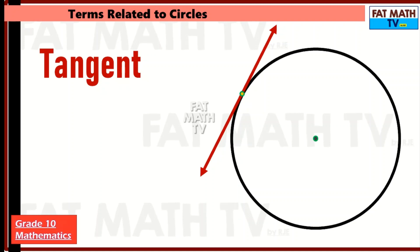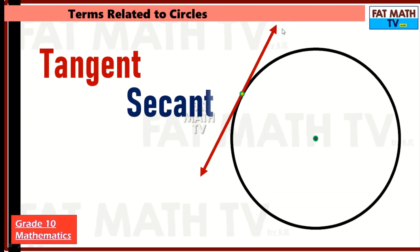Tangent to a circle. A tangent is a line that touches the circle at only one point. That point is called the point of tangency. So this red line here is tangent to the circle. And a secant to a circle is a line that intersects the circle at exactly two points. So this blue line here is called a secant of a circle.